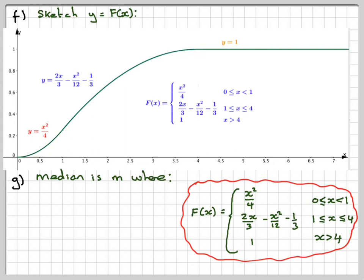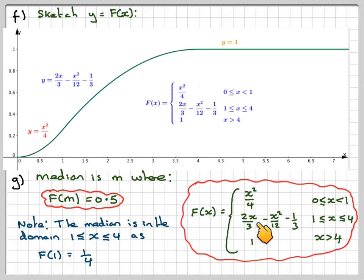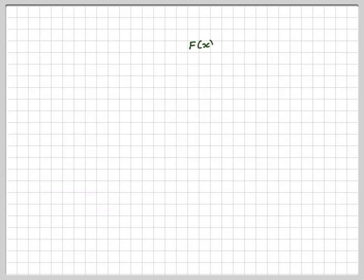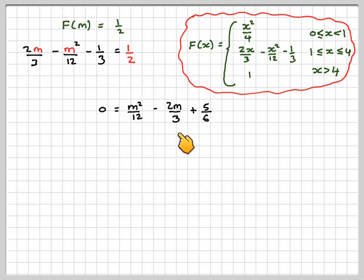The last part is finding the median. The median M is where the cumulative distribution function F of M equals 0.5 — we're finding where the area is exactly divided in half. We know at the end of the first piece, F equals 1 quarter, so we need to use the second domain. Setting 2M over 3 minus M squared over 12 minus 1 third equal to 0.5. Rearranging to make M squared positive: M squared over 12 minus 2M over 3 plus 5 over 6 equals 0. Multiplying through by 12: M squared minus 8M plus 10 equals 0.